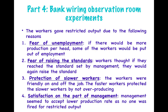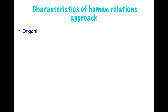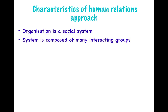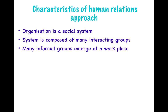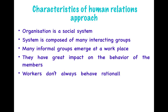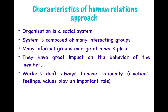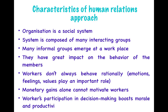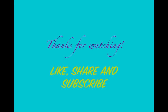These four Hawthorne experiments led to the human relations movement. From these experiments, key characteristics of the human relations approach were identified: organizations are basically social systems composed of many interacting groups; many informal groups emerge at the workplace and have a great impact on members' behavior; workers don't always behave rationally — emotions, feelings, and values play an important role; monetary gains alone cannot motivate workers; and workers' participation in decision-making boosts their morale and productivity.